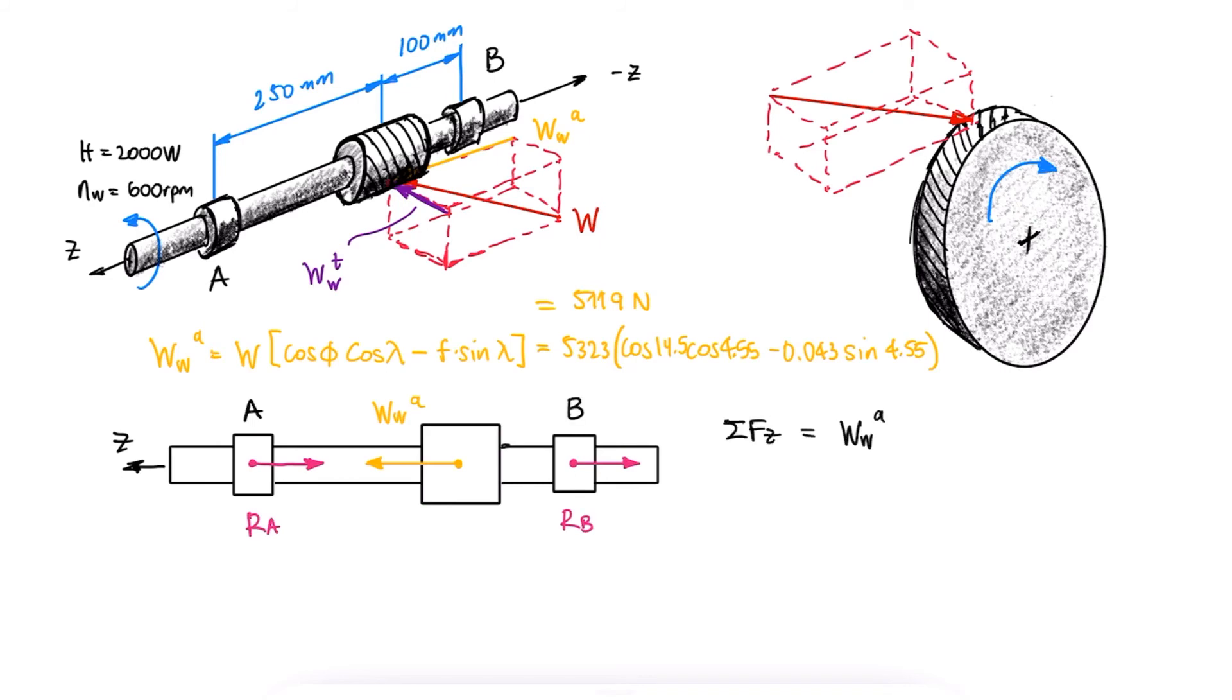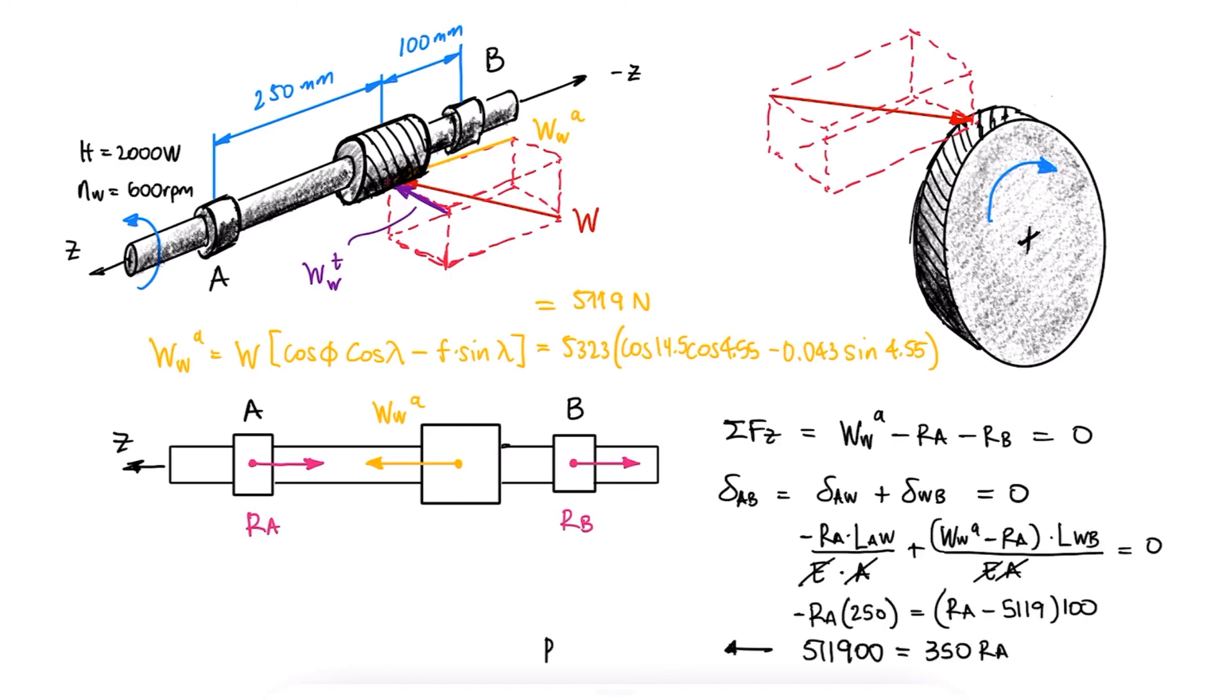From a sum of forces in the z-direction, we find an expression that relates Ra to Rb, and by knowing that the total displacement from A to B is the displacement from A to the worm plus the displacement from the worm to B, we use the axial loading deformation expressions to find the value of the axial reaction force at bearing A.